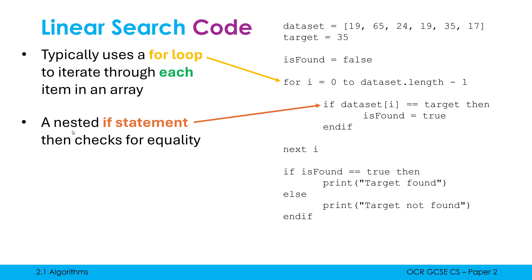By the way, nesting is when we have a block of code inside another block of code. So this if statement is nested because it's inside the for loop, whereas this if statement at the bottom isn't nested because it's not inside any other bits of code.